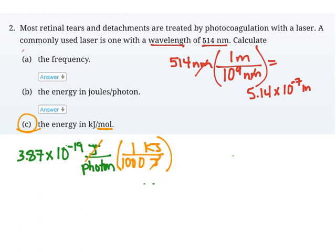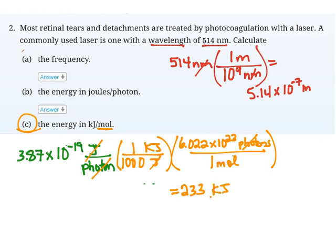I know that in one mole of anything, there are 6.022 times 10 to the 23rd things. A mole is really just a number: 6.022 times 10 to the 23rd. I can relate that to photons as well. There are 6.022 times 10 to the 23rd photons in one mole of photons. I want mole on the bottom so it stays in the denominator; photons cancel out. In my calculator, I'm doing 3.87 times 10 to the negative 19, multiplying by Avogadro's number, and dividing by 1,000. I should end up getting 233 kilojoules per mole.